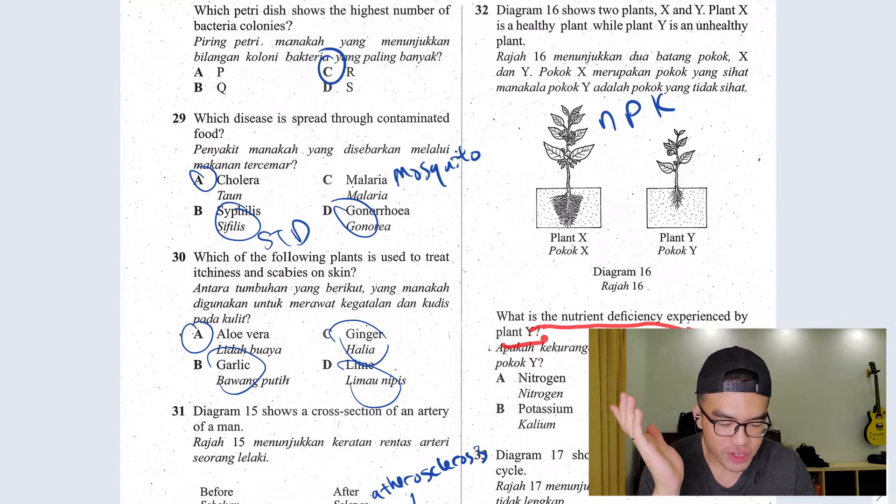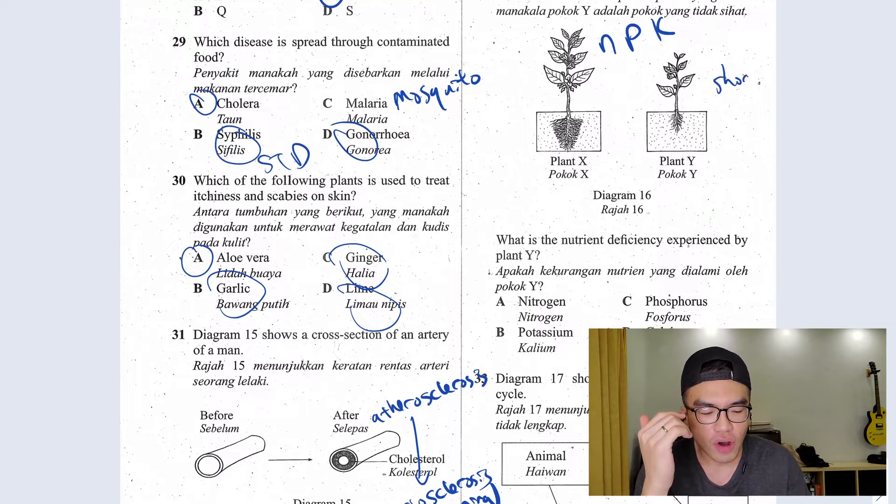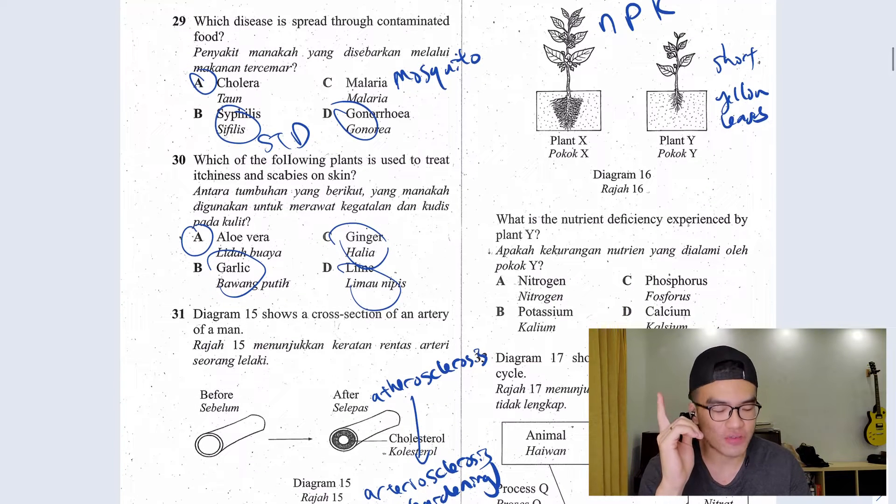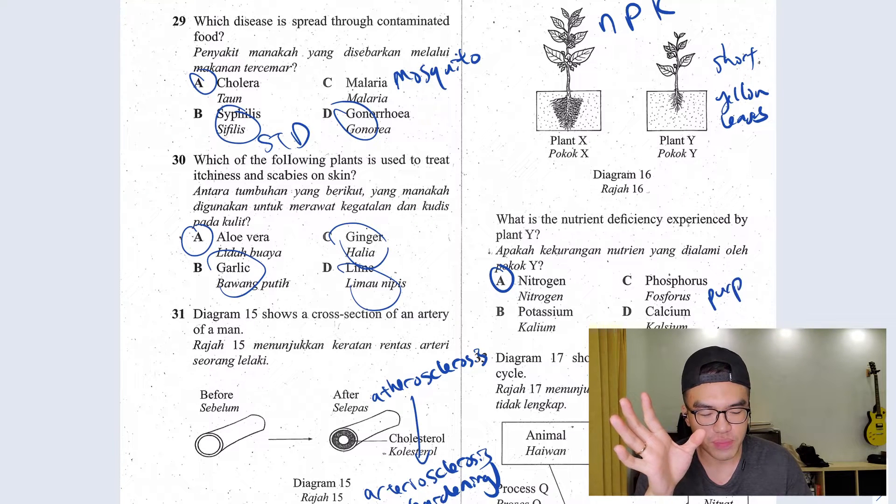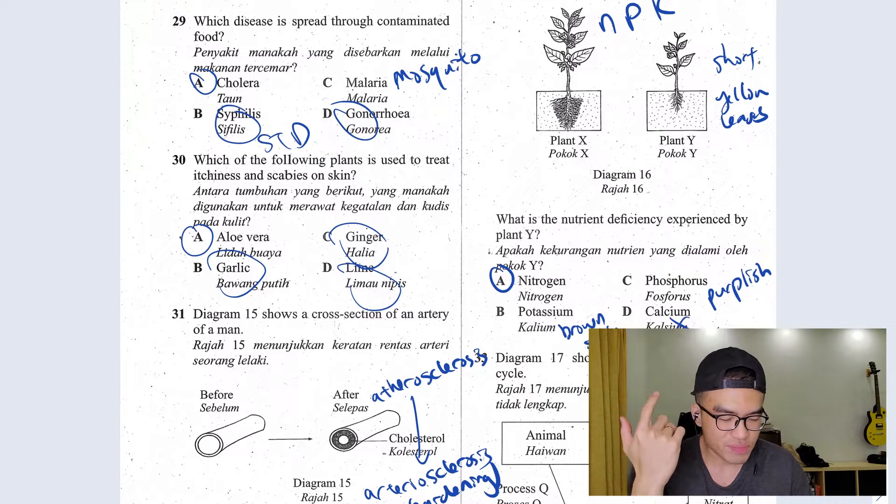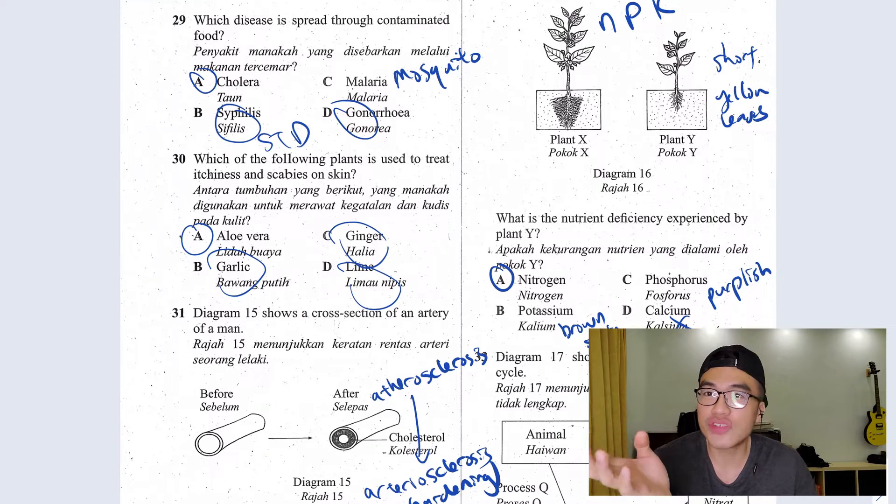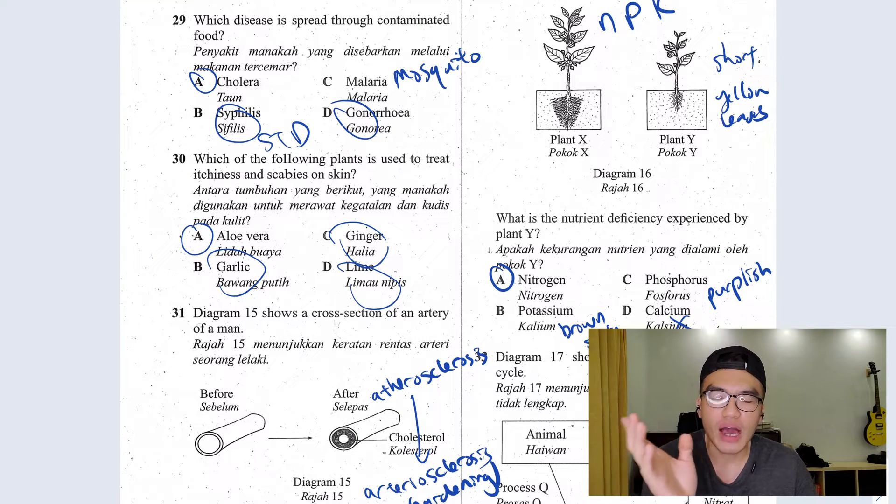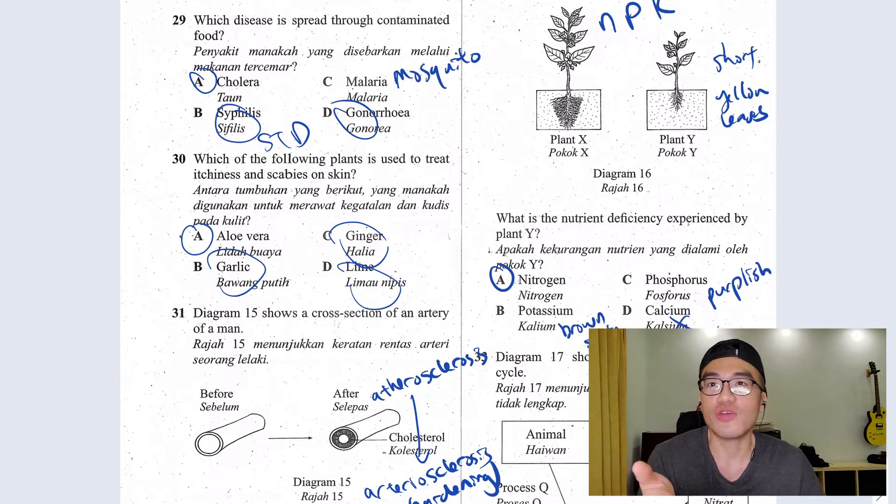What is the nutrient deficiency experienced by plant Y? If a plant is being very short or if they have yellow leaves, this is for sure the lack of nitrogen. Quick revision. If a plant lacks phosphorus, they would have purplish leaves. Potassium, the leaves would have brown spots. How about calcium? We don't need to care about calcium because that is not very common in exam. Nutrients for plants, it is not very common in exam. I wouldn't recommend you spending too much time in this because usually they only ask in objective questions.